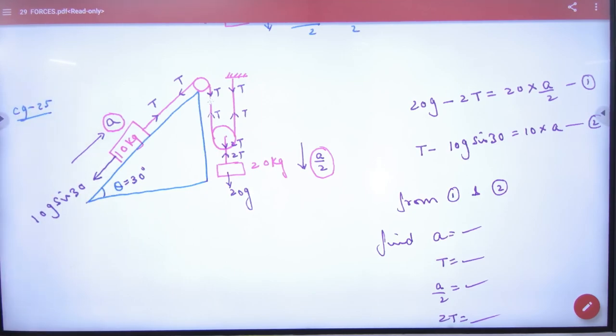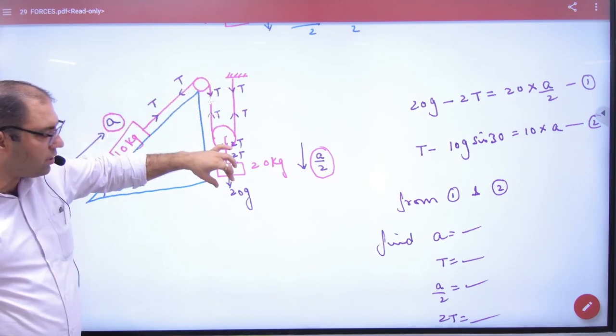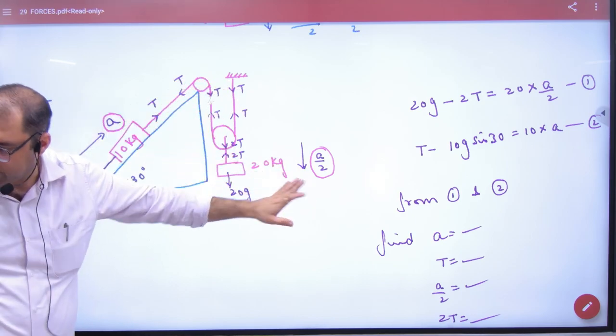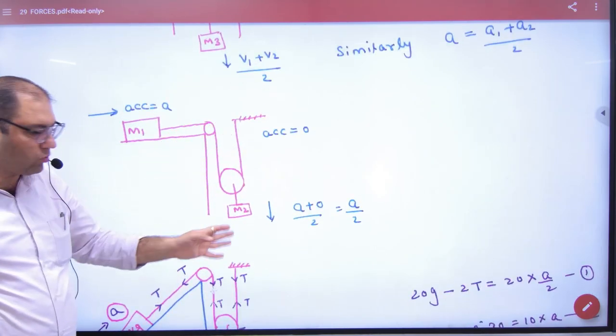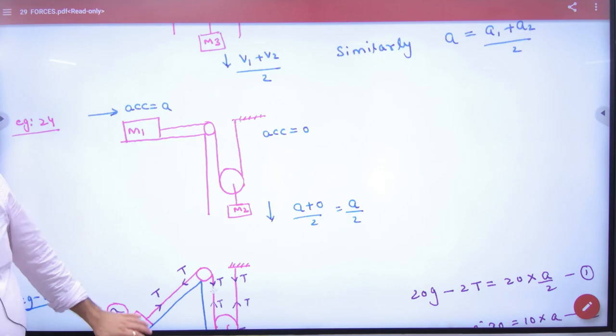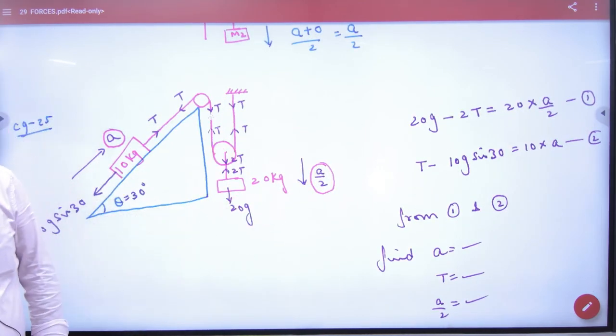This is just a method to explain the concept. How will it apply directly in numerical? If this is a, this is zero, then what is its average? A plus zero by two equals a by two. Same question this one. If this is a, this is zero, then a plus zero by two. Same question - this is a, this is zero, a plus zero by two.